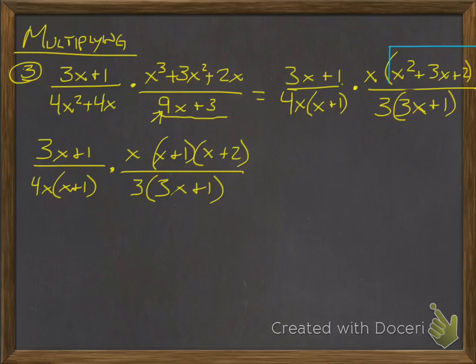Now cancel out all your binomials or terms that are either on the top and the bottom. It doesn't matter which fraction it is. It's cross-canceling. So for this three x plus one and this three x plus one, I can cancel those out. I have this x plus one and this x plus one. As long as one is on top, one is on bottom, you can cancel them out. And this x can cancel out with that x, with not the four, but with the x. And then after that, after everything's canceled out, you just multiply straight across. The only thing I have in the numerator is x plus two. The only thing I have in the denominator is four times three. So I have x plus two divided by twelve.